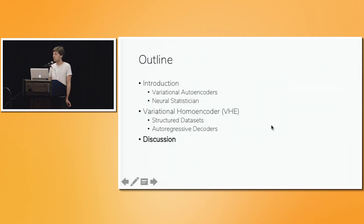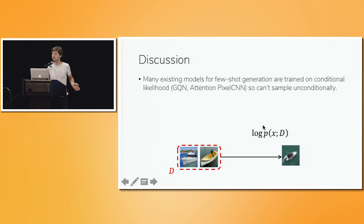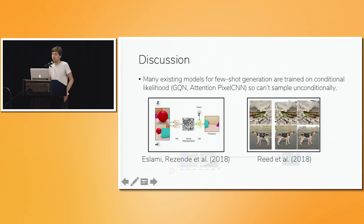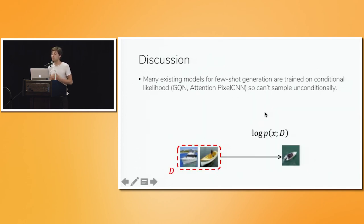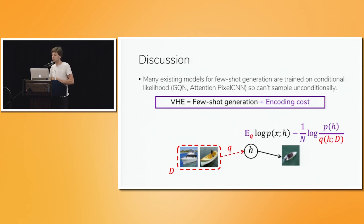So as a final discussion point, I'd like to give an alternative view of the variational homoencoder. Nowadays, there are lots of models in deep learning that are trained directly for few-shot generation, usually by maximizing the likelihood of some query image given a support set. So generative query networks are one architecture for doing essentially this, and attention PixelCNNs are another. And so from one perspective, what we're doing with the VHE is we're starting with a neural network for few-shot generation, like this. And we take some hidden layer in the neural network, call it h, and we add some noise to it, and then we call that hidden layer a latent variable, giving an encoding cost in the objective.